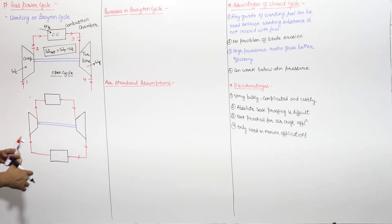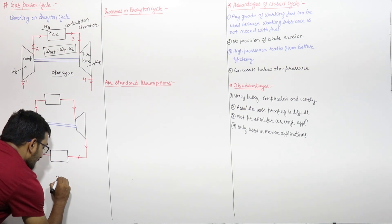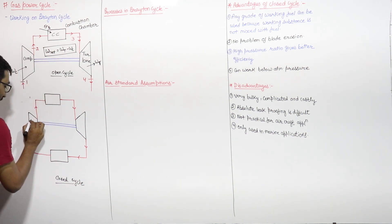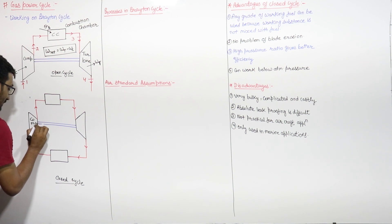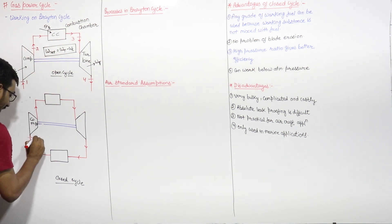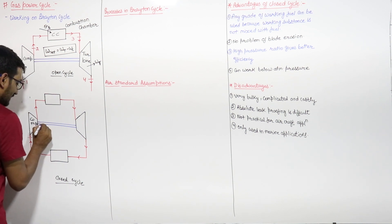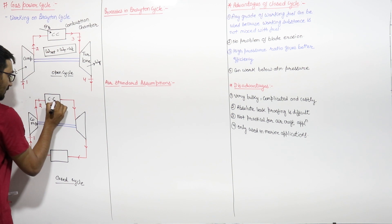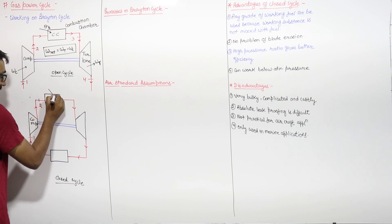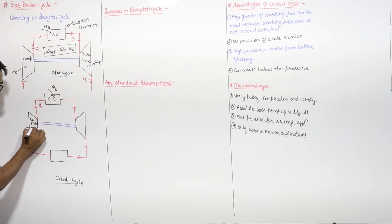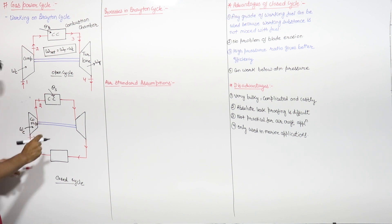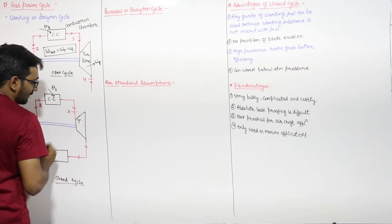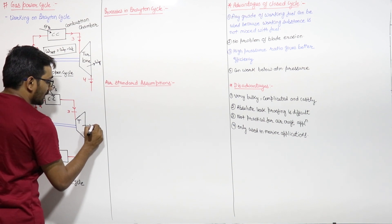If we take a closed cycle — the closed Brayton cycle — suppose this is the compressor, with inlet at point 0.1. After the compressor, the gas enters the combustion chamber, where some amount of heat QS is added. The compressor takes some work WC. After this heat addition, at point 0.3, the gas goes to the turbine, which gives work output WT, and point 0.4 is the turbine exit.